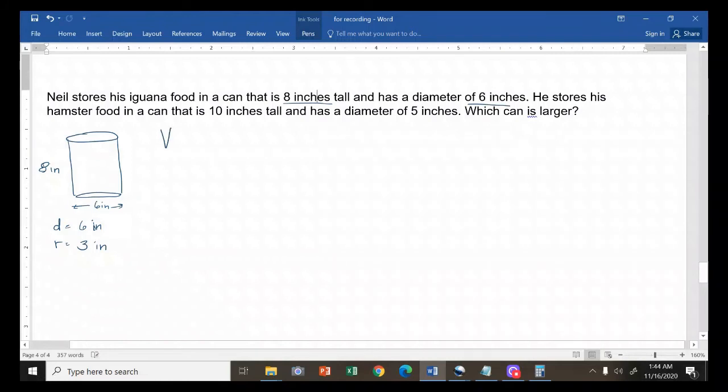To compute for the volume of the iguana can, I'll write i. That is pi r squared h. We substitute pi with 3.1416. And then r squared, we use 3 inches squared. And then we have a height of 8 inches. When we compute this, it is 226 cubic inches.